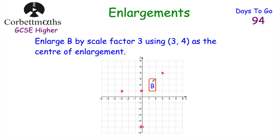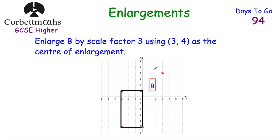For the final point, it's 2 to the left and 3 down from the centre of enlargement. Multiplying by 3, it's going to be 6 to the left and 9 down. Now joining those points up — that's shape B enlarged by scale factor 3 using (3, 4) as the centre of enlargement.